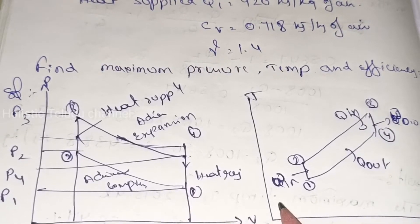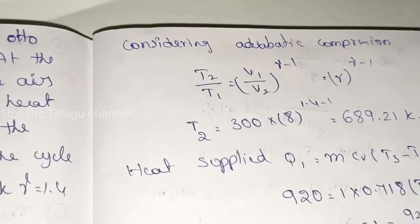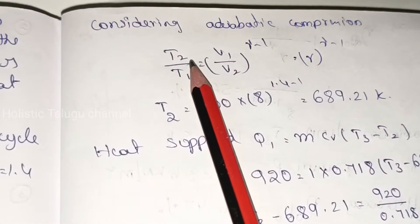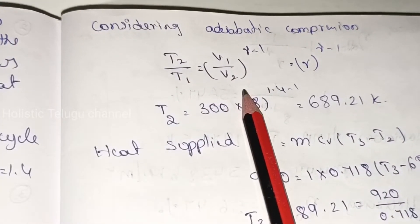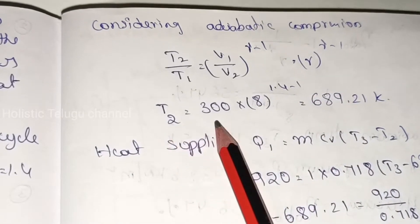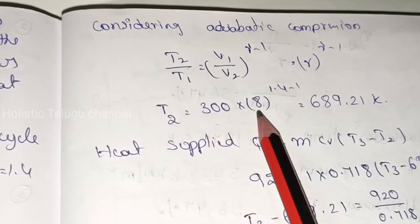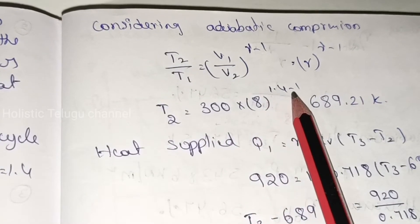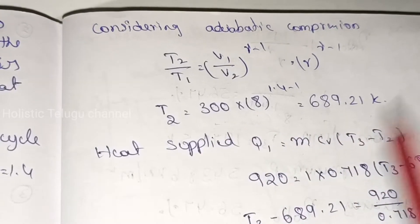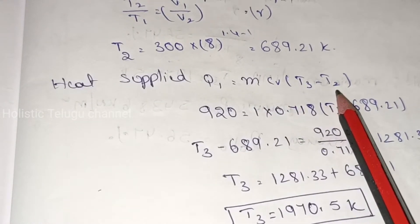We have already drawn the Otto cycle diagram. Now consider adiabatic compression. T2 divided by T1 equals (V1/V2) to the power gamma minus 1, which is also equal to R to the power gamma minus 1. So T2 = 300 × 8^(1.4−1), which gives T2 = 689.2 Kelvin.